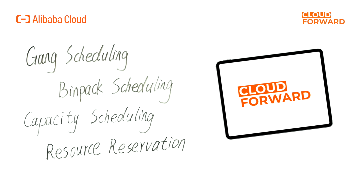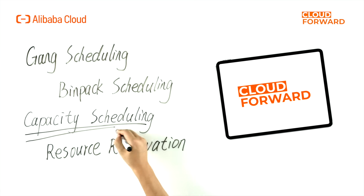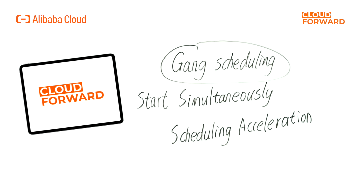The ACK Cloud Native AI suite offers gang scheduling, bin pack scheduling, capacity scheduling, and resource reservation scheduling capabilities for batch computing tasks. Gang scheduling and bin pack scheduling effectively improve resource utilization. For gang scheduling jobs, all tasks need to be scheduled simultaneously. If only a subset of tasks starts, the initiated tasks will continue waiting until the remaining tasks are scheduled. In some edge cases, all jobs remain in a suspended state, leading to a deadlock. To prevent large jobs from monopolizing resources over small jobs, gang scheduling ensures that all associated processes start simultaneously.